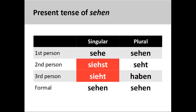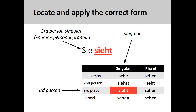The verb sehen, meaning 'to see,' is another example, this time using a strong verb. You will note that this conjugation pattern retains all the endings found in the conjugation pattern for regular verbs, but that the verb stem in the second and third person singular shows a vowel change from 'ee' to the double vowels 'ie.' The sentence 'sie sieht,' meaning 'she sees,' shows the correct third person conjugation.